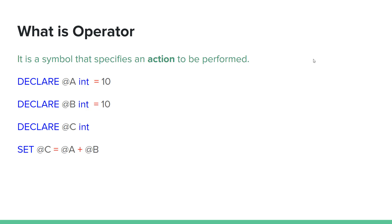Now, declare variable A, type int. The equals sign is used as an assignment operator — it assigns a value. The action performed is Assign. It's called the operator equals, Assign. It's a symbol. It's called an Asser as a variable.